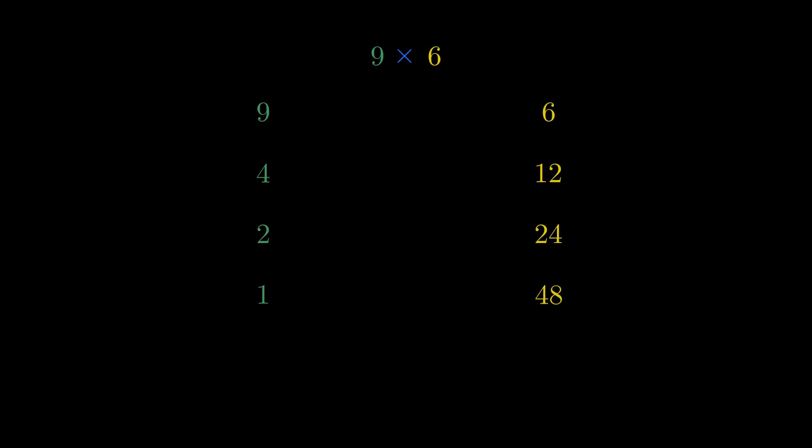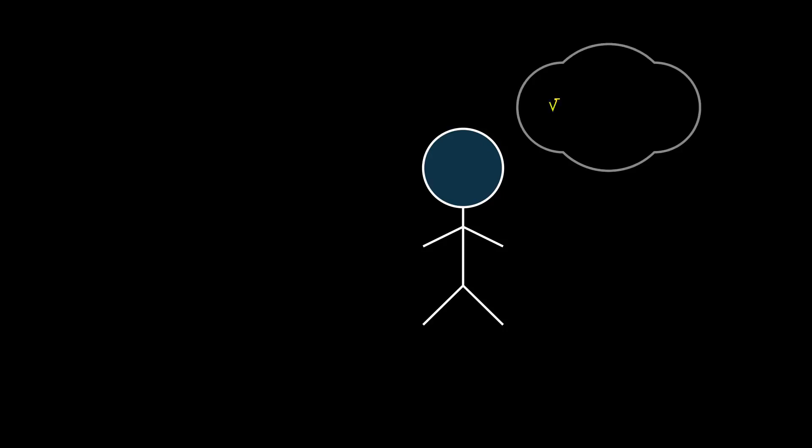Now, I eliminate all the rows that have even numbers in the first column. So, there goes the row of 4 and the row of 2. Now, we add the remaining row values of the second column. Here, it is 6 plus 48 which is equal to 54 and that is exactly what is equal to 9 times 6. Sounds spooky, huh?